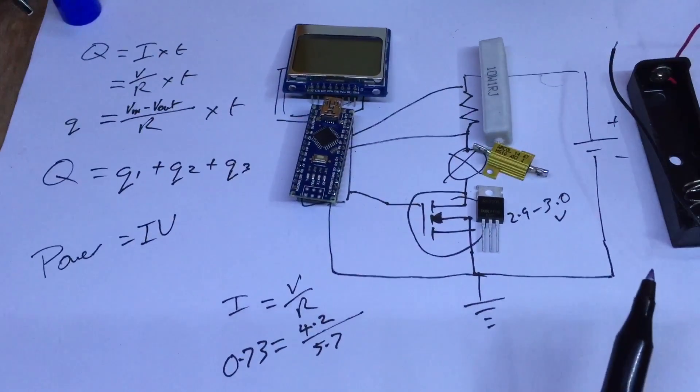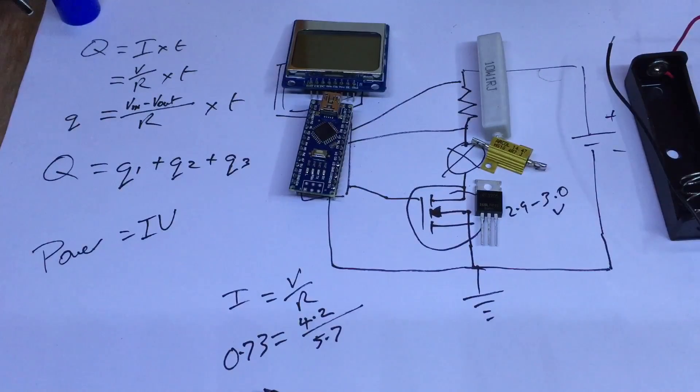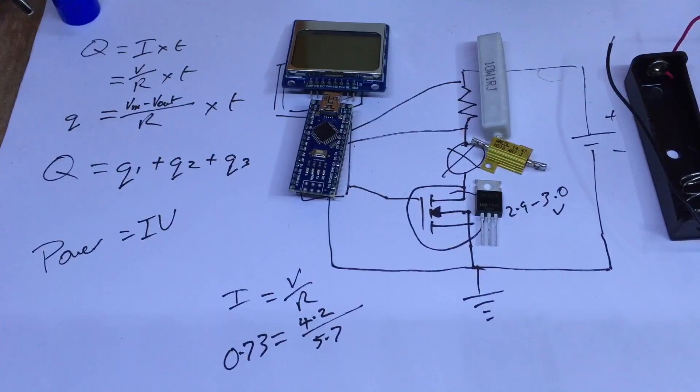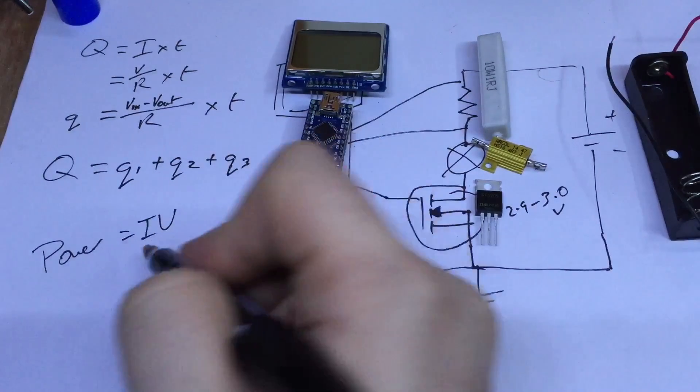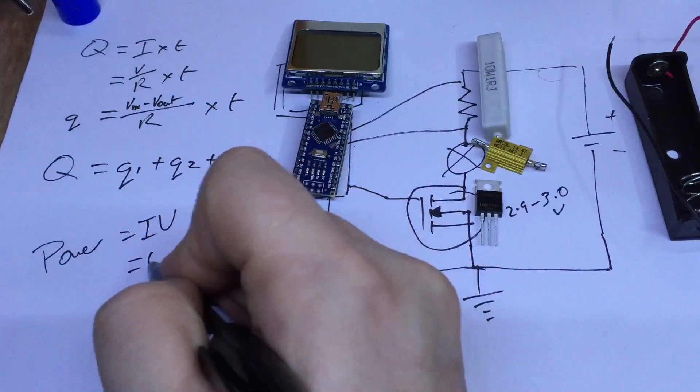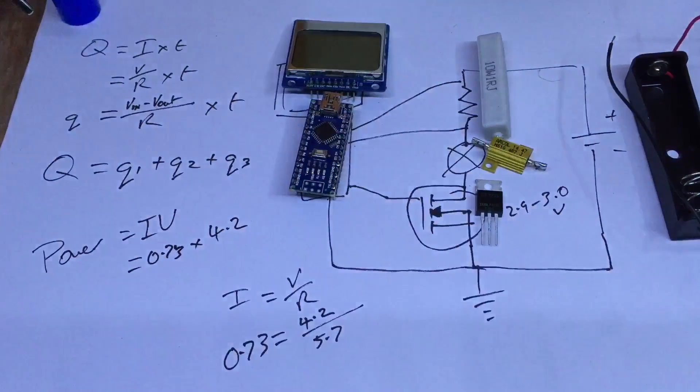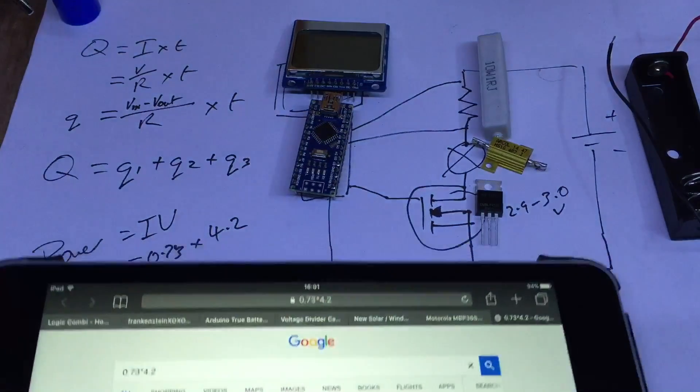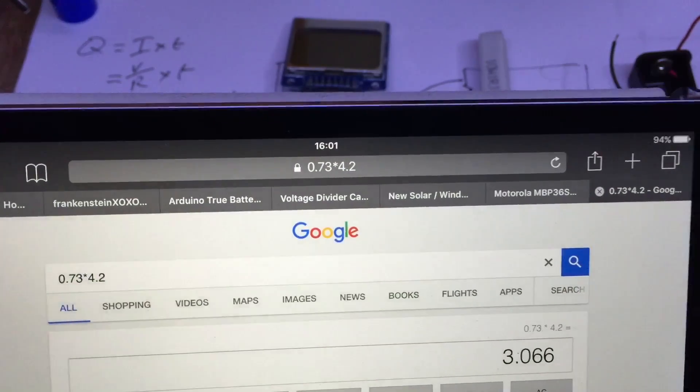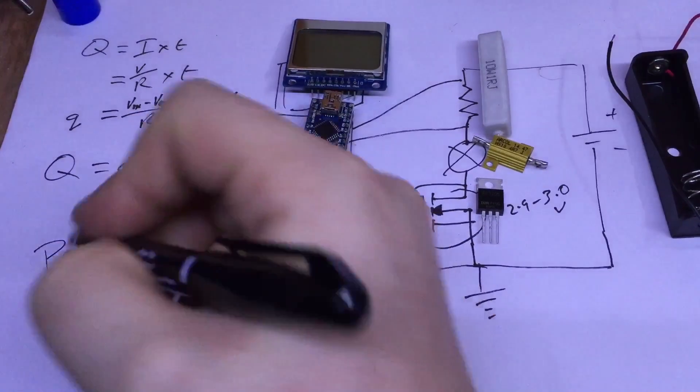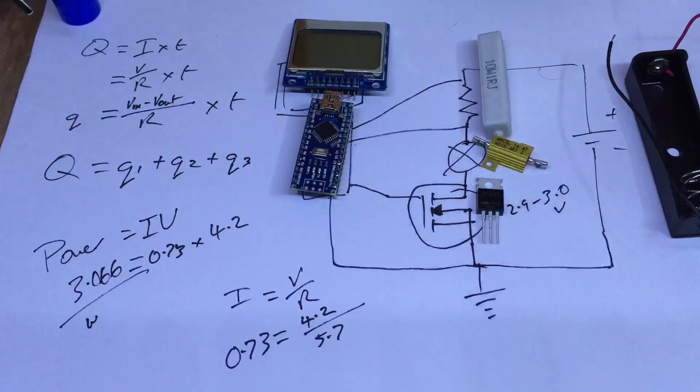And of course, that will get smaller as the voltage goes down. Resistance will stay the same, the voltage will go down, the current will also come down. So three quarters of an amp we're looking at. Power equals IV, which is 0.73 times 4.2. This is our worst-case scenario. Google tells me that 0.73 times 4.2 is 3.066, so 3 watts. So these 10-watt resistors should be fine.